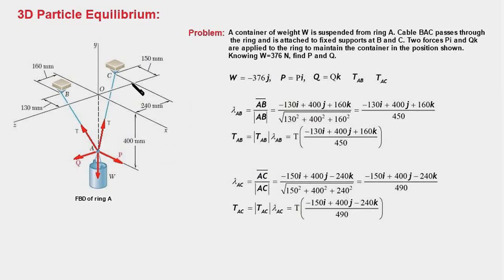And to find the position vector AC, we move 400 mm along positive y-axis, we move 240 mm along minus z-axis, and 150 mm along minus x-axis. So our position vector will be minus 150i plus 400j minus 240k. The denominator again is the magnitude of this position vector, and the denominator will simplify to 490. And therefore, this is the unit vector along AC. And therefore, the force TAC would be equal to the magnitude of this force TAC, which is T times the unit vector.